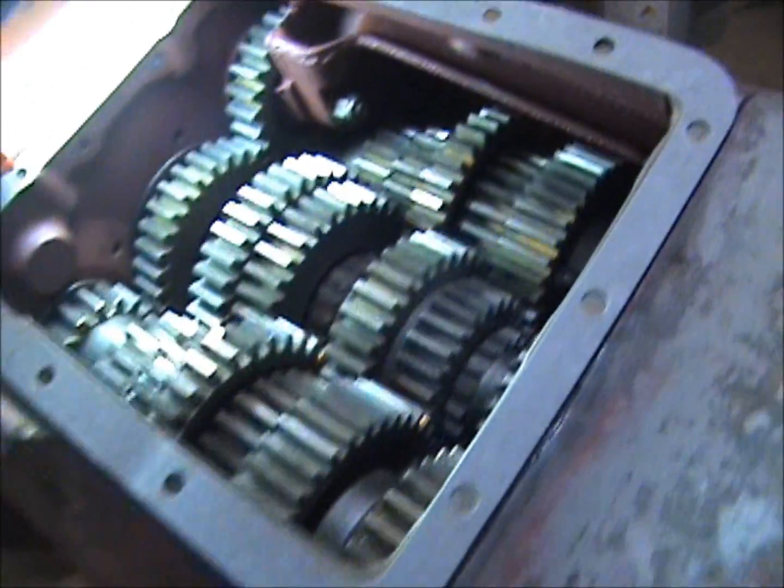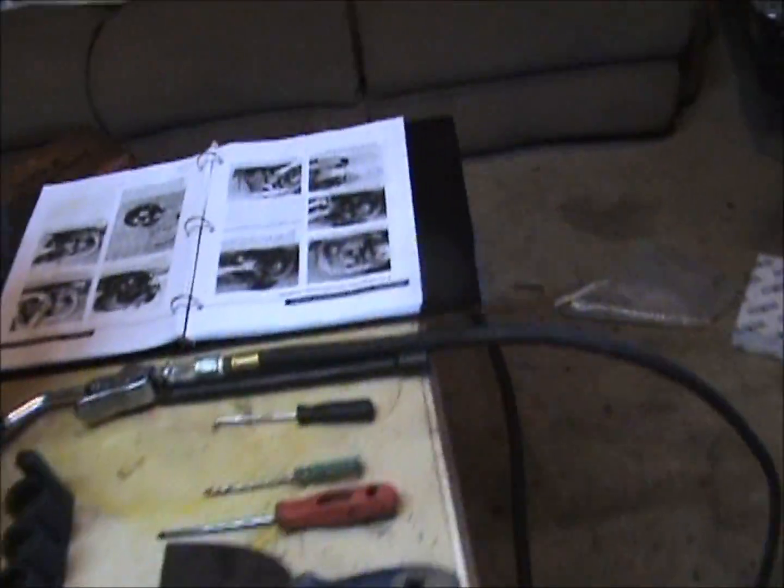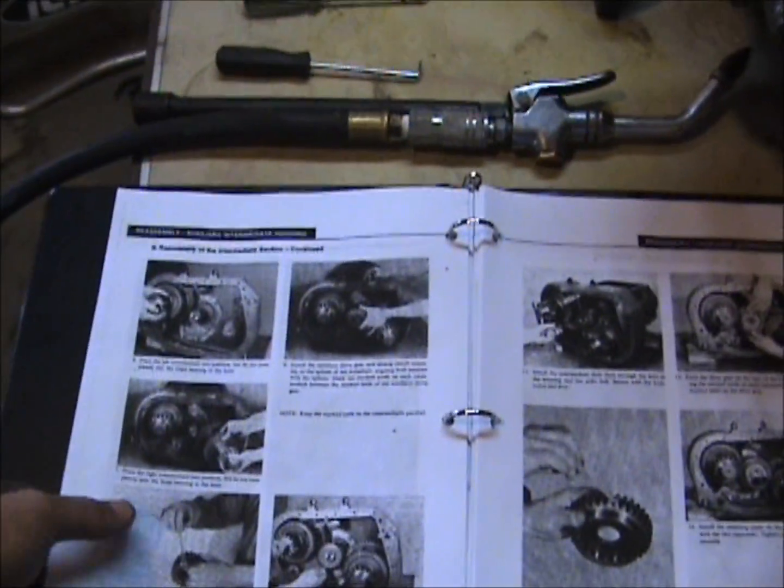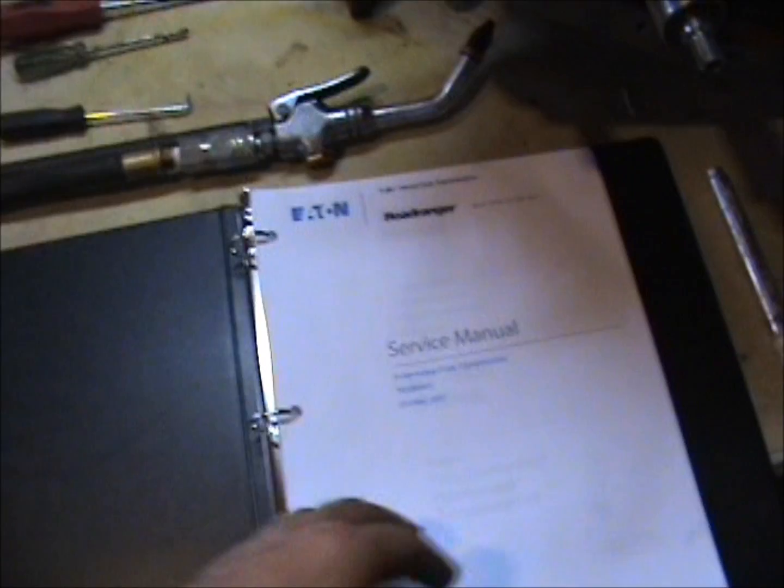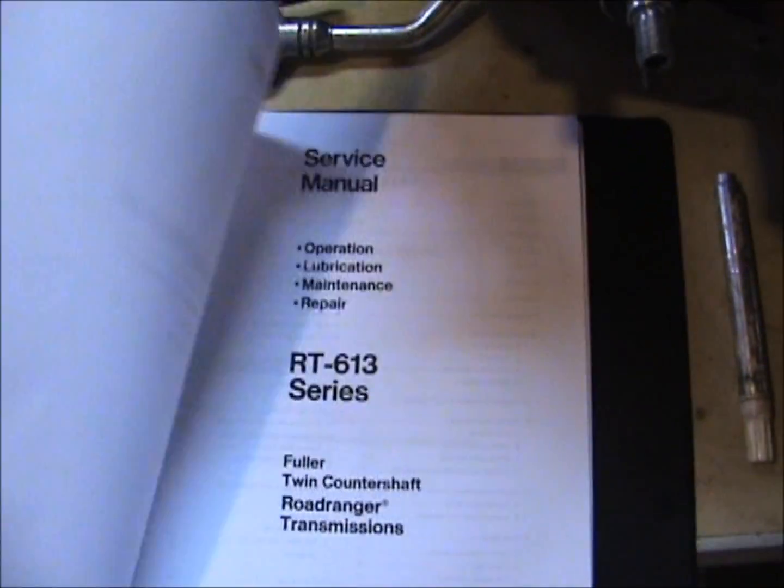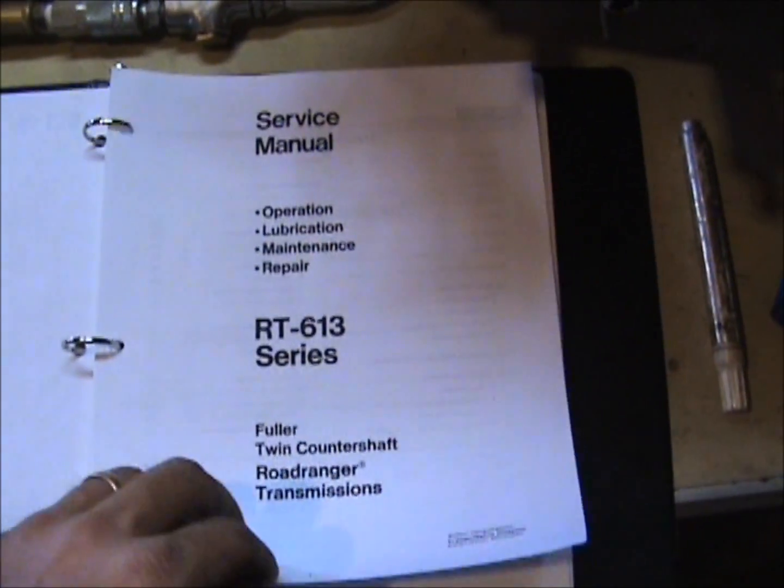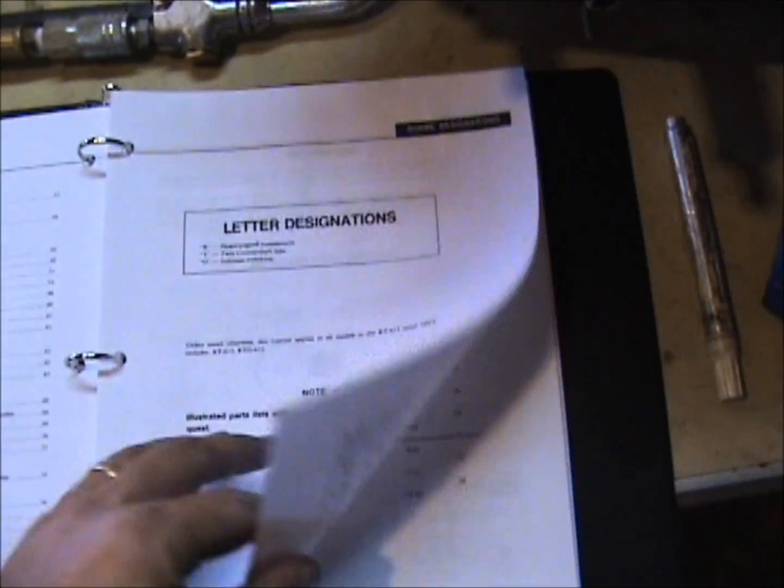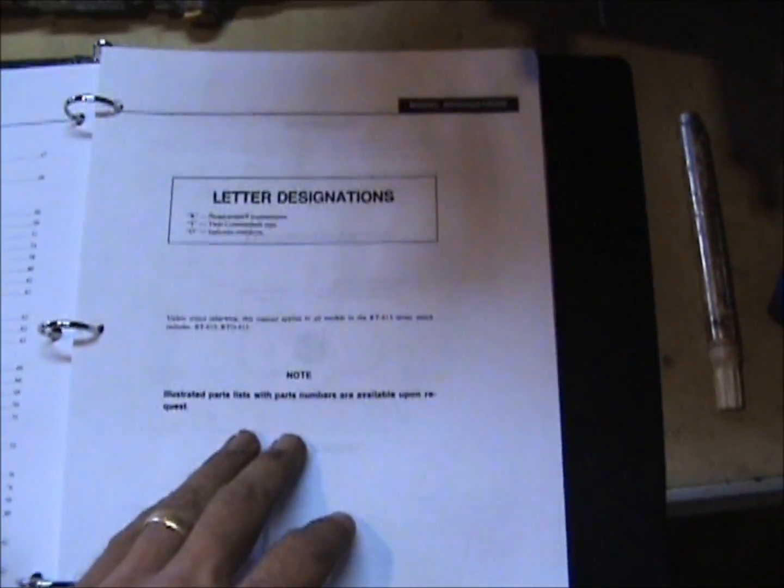You can get online—Eaton has a really good website, eatonroadranger.com—and go to literature. You can download for free all of these manuals and parts books. It's a little tricky to download it, print it, and get it like a book where you've got your pages sequential.